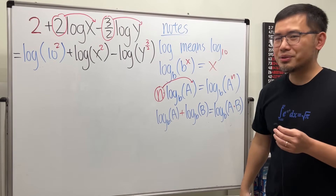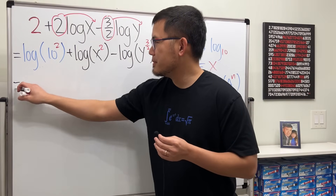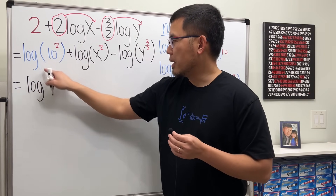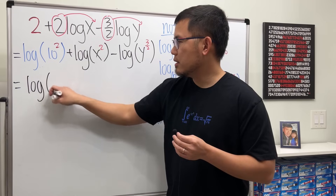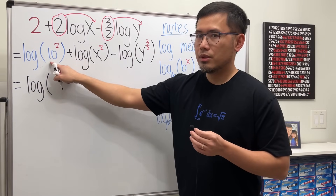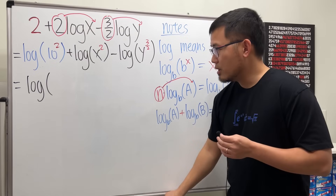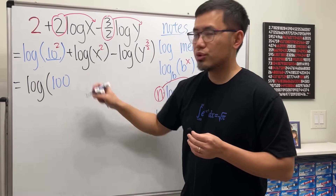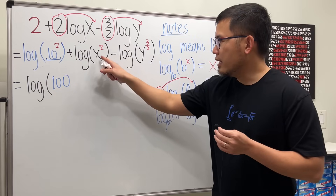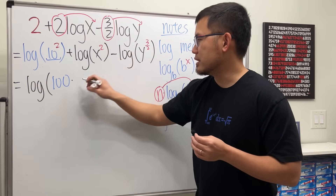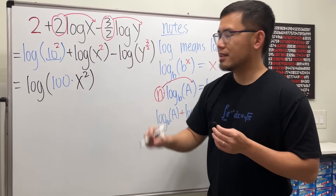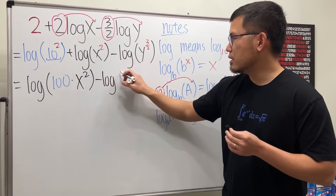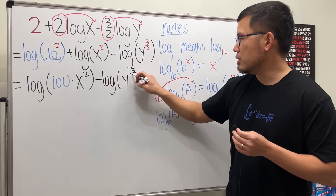Let's use this for the first two terms. Log plus log, adding, so we get log base 10. Inside we have 10 squared, which is 100, multiplied by x squared — giving us 100x squared. Then we write down minus log of y to the 3 over 2.